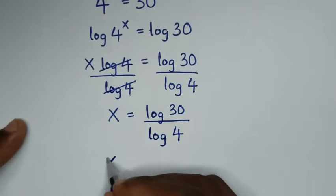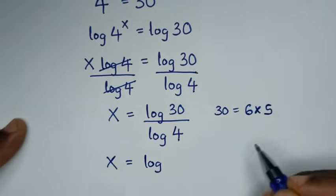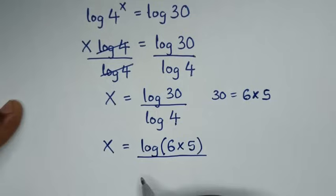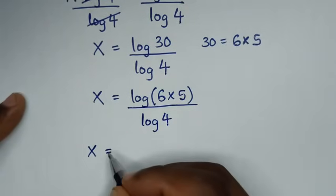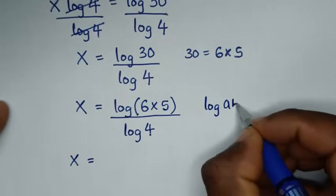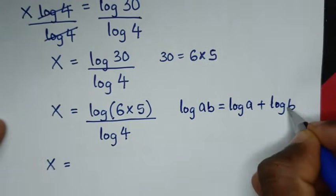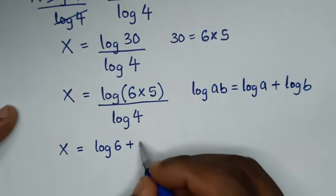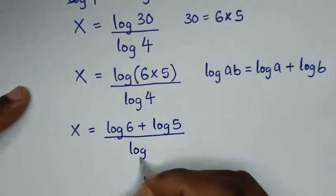Then x is equal to log of 30 over log of 4. Now 30 is equal to 6 times 5, so this log of 30 here it will be log of 6 times 5, then bracket, over log of 4.